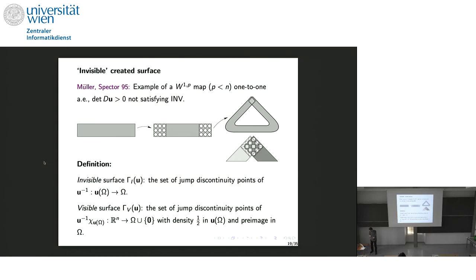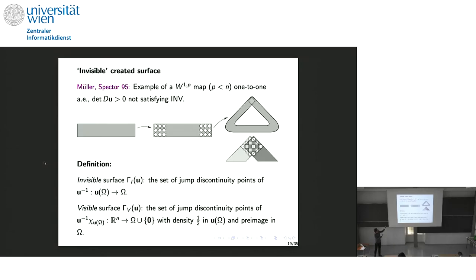There is a pathology called invisible created surface, from the example of Müller and Spector. When cavities are created you must be careful about what you mean by interpenetration of matter, because you can interpenetrate even if the map is injective and the determinant is positive. In this example, Müller and Spector constructed nine cavities on one side and nine on the other, then bent the bar and interlaced the cavities so that matter goes to vacuum and vacuum goes to matter — a very finely tuned interlacing.